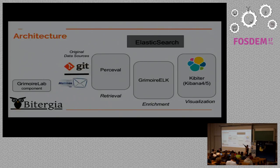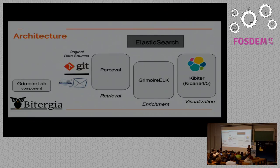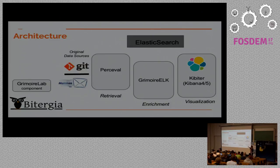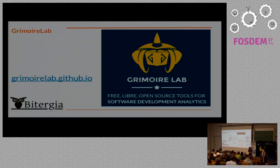We have raw indexes which have exactly the same information as the original data source. So if you need to query data, you don't need to go to the original source anymore — you just query Elasticsearch. Then, for producing added-value indexes, we use GrimoireElk. GrimoireElk goes to the raw indexes and enriches the information — for instance, calculating how long it took to close a ticket, or whether a pull request is still open. The enriched indexes are designed for use with Kibana. Our version of Kibana is Kibiter, which is a soft fork, but you can also use standard Kibana.